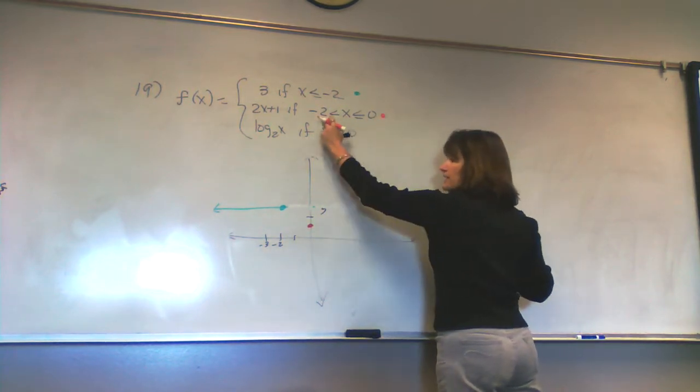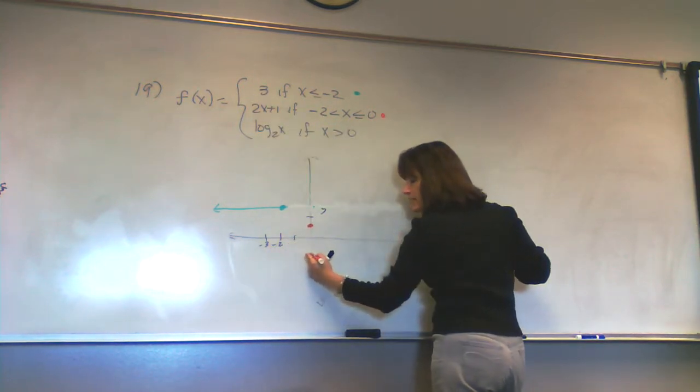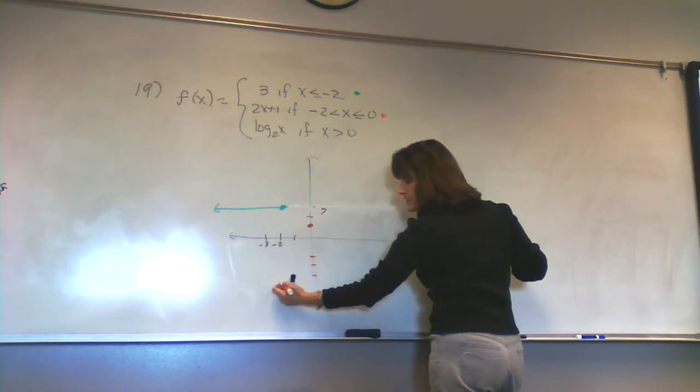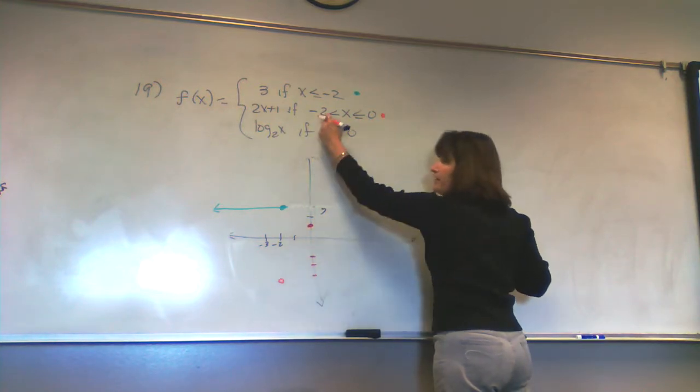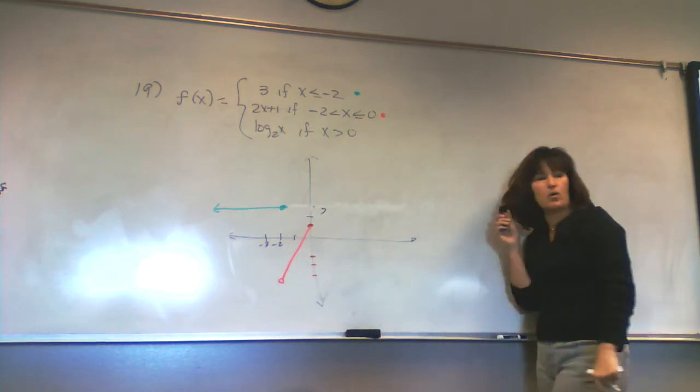So, for instance, if I put x equals negative 2 in to here, I get negative 3, so I get the point negative 2, negative 3, only I don't get to go all the way to there. I just go right up to there, but I don't include it, so that one's open.